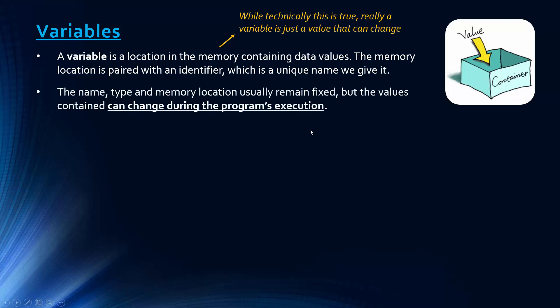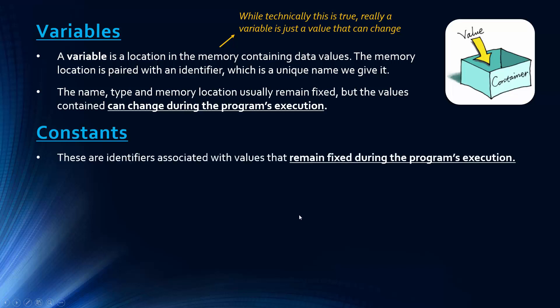Despite the name, the data type, and the location being fixed, the values can change during the program's execution. That contrasts with a constant. A constant is an identifier associated with values that remain fixed during the program's execution. These values do not change.